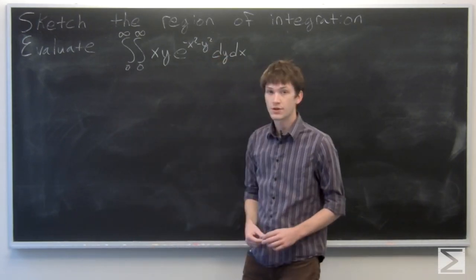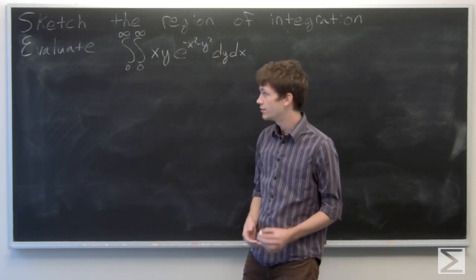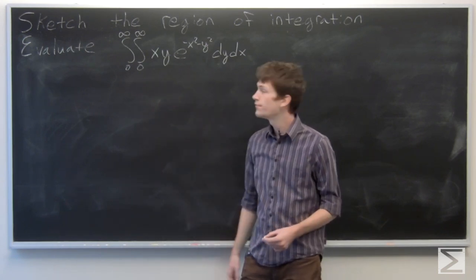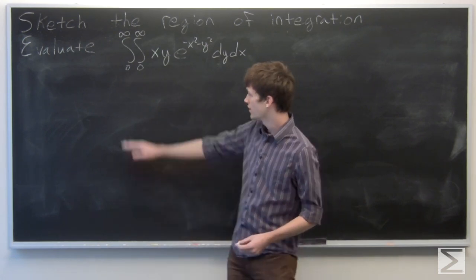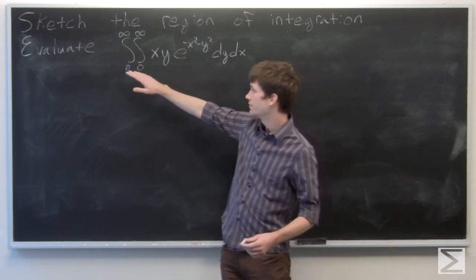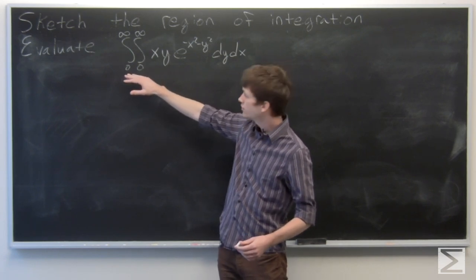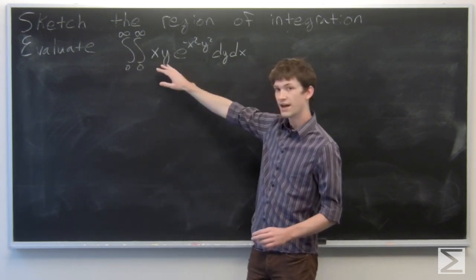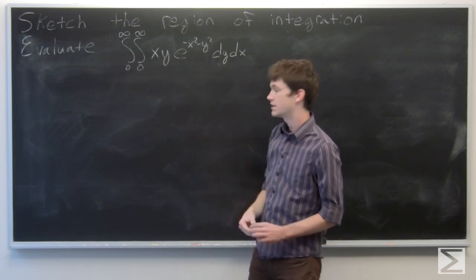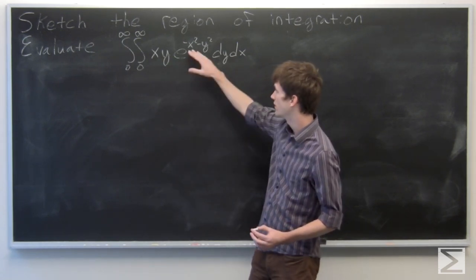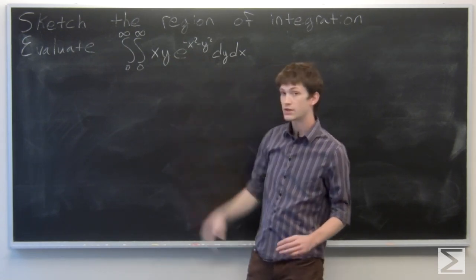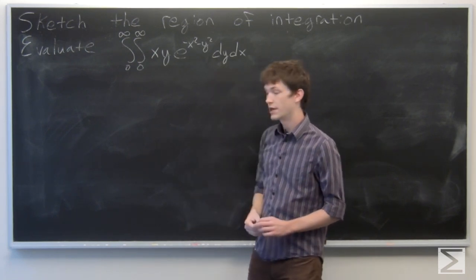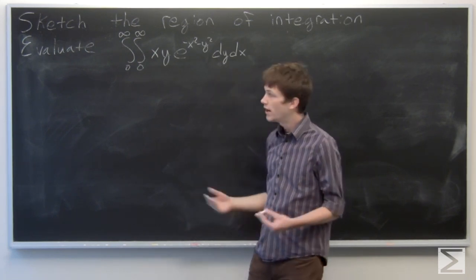In this problem we're asked to sketch the region of integration R in R2 and then evaluate the iterated integral. We're given the iterated integral where both limits of integration are from 0 to infinity of x times y times e raised to the power of negative x squared minus y squared, integrating with respect to y and then x.